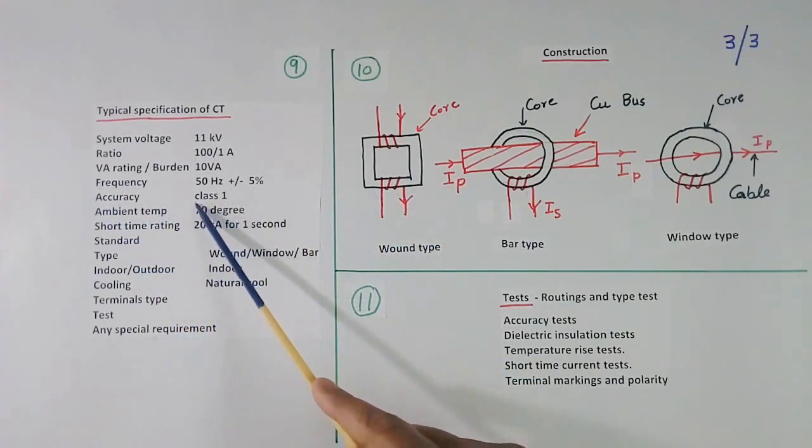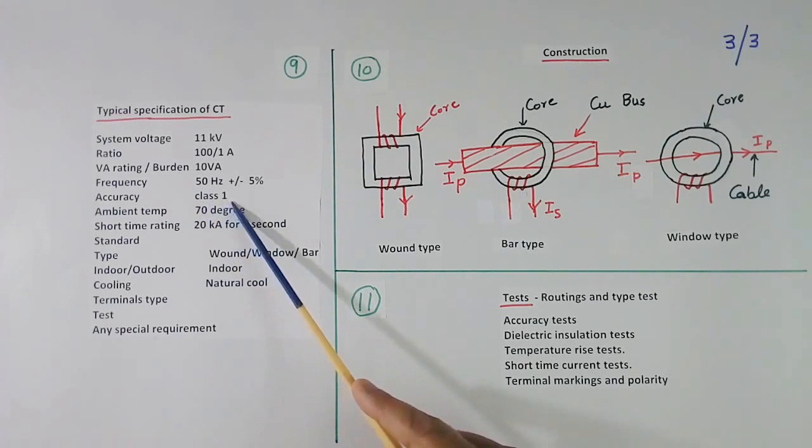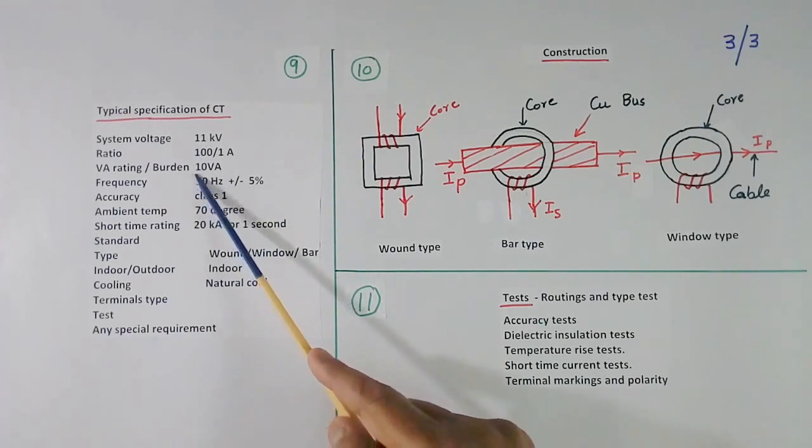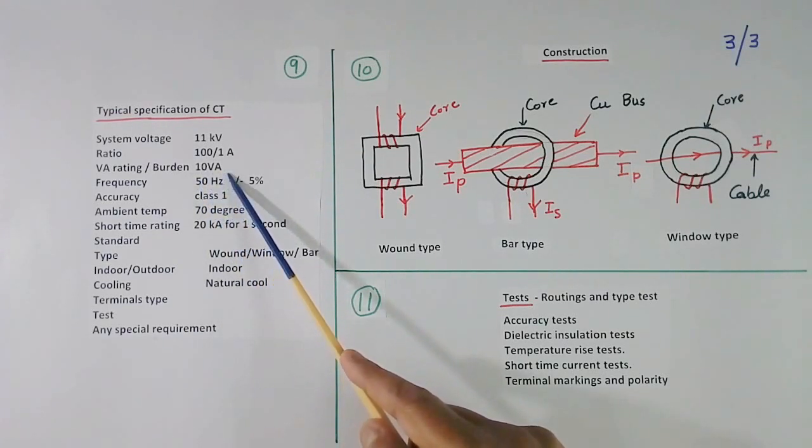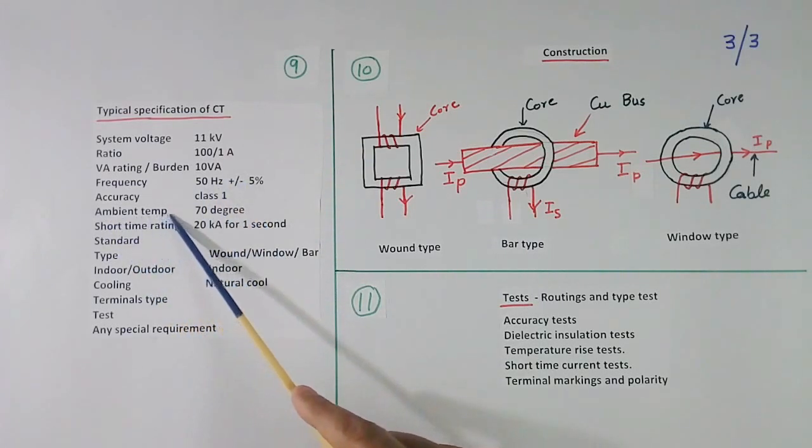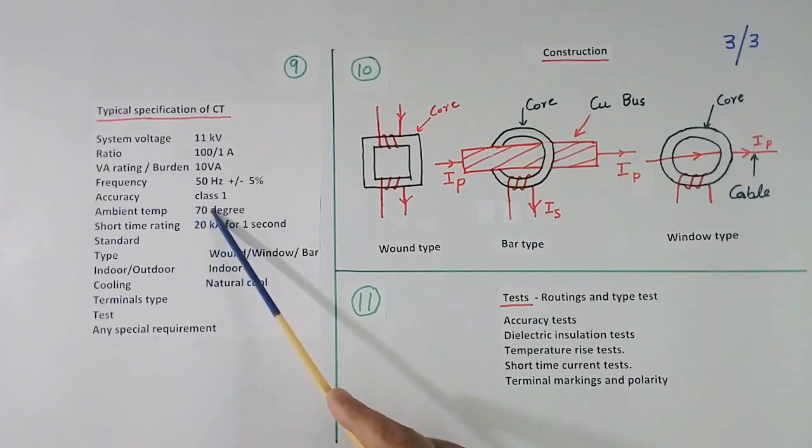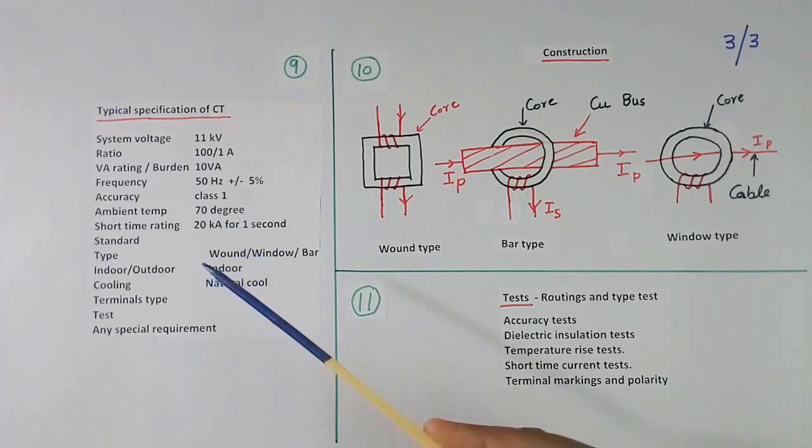Then we will tell accuracy, like class 1. Class 1 means 1% accuracy at rated burden. Then we have to tell ambient temperature, 70 degree or some other. Industrial grade CT will have 70 degree ambient. You can tell 50 or 45 if you want to use for commercial application.